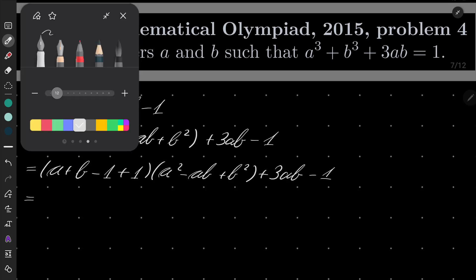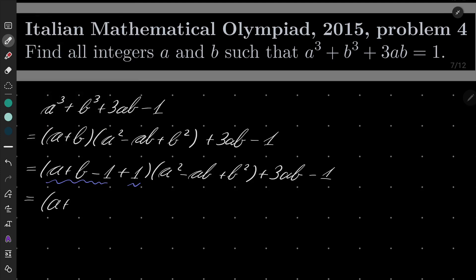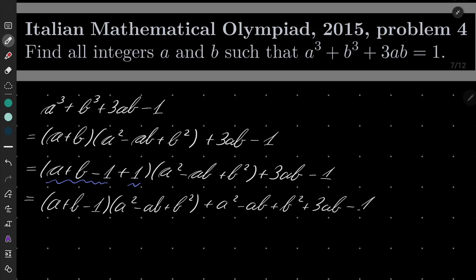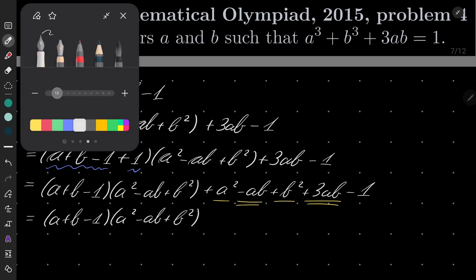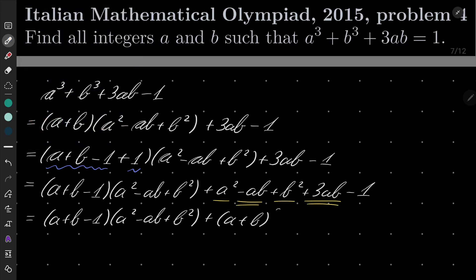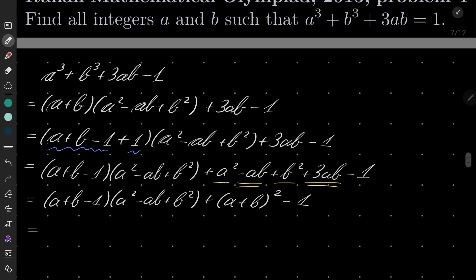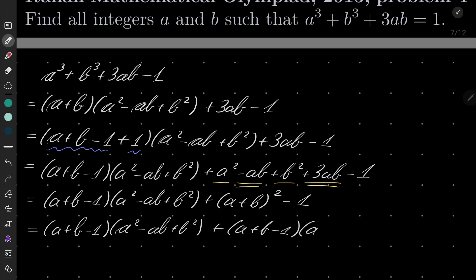Now I will split this into two different expressions. First will be a plus b minus 1 times the second parenthesis. The second will be plus a squared minus ab plus b squared plus 3ab minus 1. If you look closely, these three terms — a squared, b squared plus 2ab — can be written as a plus b squared minus 1, and we can factorize the last part to get a plus b minus 1 times a plus b plus 1.